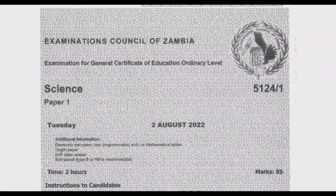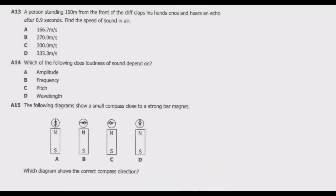Welcome viewers to another episode on ASUG 12 exams. In this episode we continue looking at the August 2022 Science Paper 1, which is basically the standard D or level physics. In the first three episodes we covered questions 1 through 12 of the multiple choice section, so in this fourth part we are going to look at questions 13 through 20.